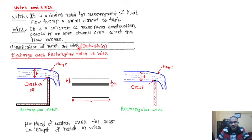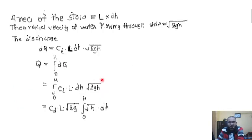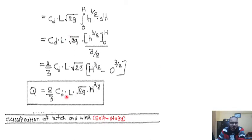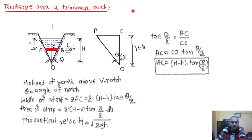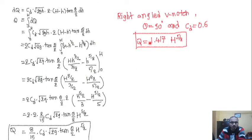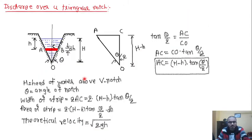The next topic is discharge over rectangular notch or weir, where we have already taken a small strip and derived the equation. Now we will move forward with our next topic, that is discharge over triangular notch. We are going to take the figure and derive the whole equation in this lecture.